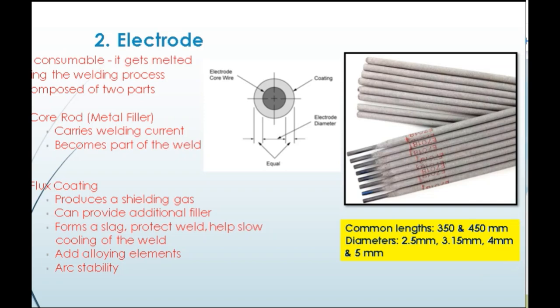Next is the welding electrode. Electrodes are consumable as they get melted during the welding process. They are composed of two parts: first, the core rod, which carries welding current and becomes part of the weld; and second, the flux coating, which produces a shielding gas and can provide additional filler. It also forms a slag, protects the weld, and helps slow the cooling of the weld. The coating also adds alloying elements and helps with arc stability.